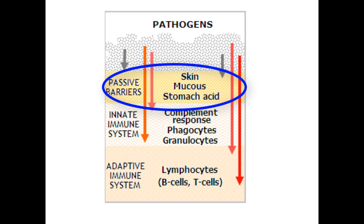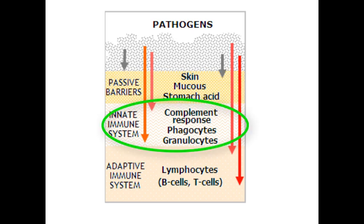If pathogens are able to pass our first line of defense, we have our second line of defense — the innate immune system — which includes different cells and proteins that are non-specific to different pathogens and try to kill as many of them as possible. The complement response involves the complement pathways, mainly the lectin pathway and the alternative pathway. Phagocytes include our neutrophils, macrophages, and natural killer cells. Granulocytes include the neutrophils, eosinophils, and basophils.